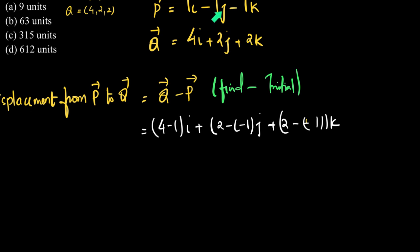So if I write this further, 4 minus 1 is 3, so 3i plus, what is 2 minus minus 1? Minus times minus is plus, so this becomes 3j, plus 2 minus minus 1 is 2 plus 1, sorry, this is 3k.